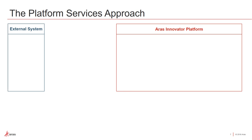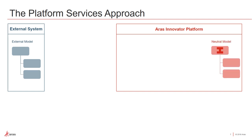In a scenario where you're using ARIS federation services, you're still going to have your external model and your ARIS item type. We're going to call it our neutral model because the neutral model is independent of any external system. It's defined only as how you need to see the data in Innovator, not necessarily how it's represented in the external system.